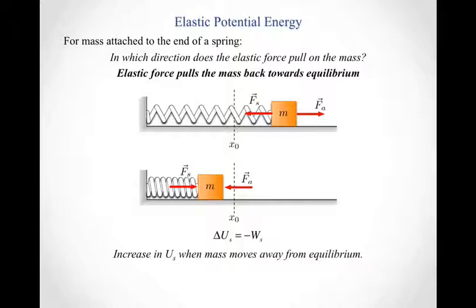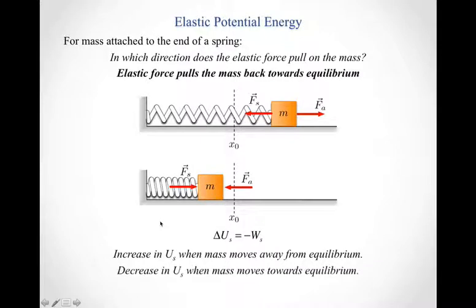In moving away from equilibrium, the spring does negative work because the displacement points in the opposite direction as the spring force. So the spring does negative work. Negative times negative means I get a positive change in the elastic potential energy. On the other hand, if the mass moves back towards equilibrium, then the spring is doing positive work on the mass. Positive work times that negative sign gives a negative change in the elastic potential energy, which means the elastic potential energy decreases when a mass moves towards equilibrium.